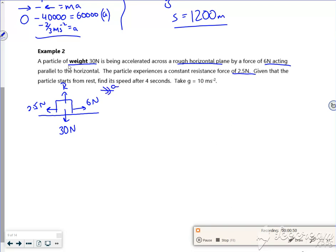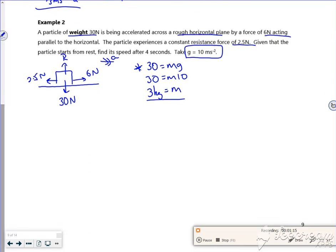Alright then. Let's find its acceleration. So it says take g to be 10. This 30 newtons here is mass times gravity, and if my g is 10, it's telling me that the mass is 3 kilos, and that helps us, doesn't it?